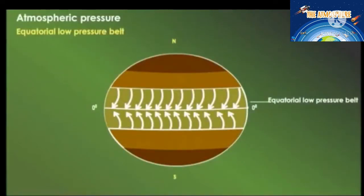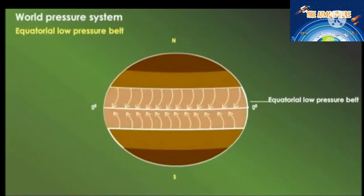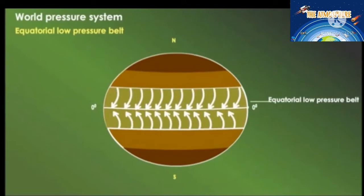Equatorial low pressure belt: the equatorial area is a region of high temperature. Due to intense heating, the atmosphere heats up, expands, and becomes light. Hence the air starts rising up in a vertical direction, causing low pressure on the ground. The horizontal movement of wind in this belt is very feeble — it is therefore a calm belt, also known as the Doldrums. It is a zone of wind convergence.